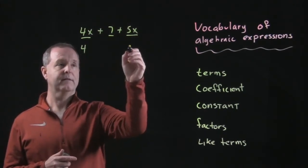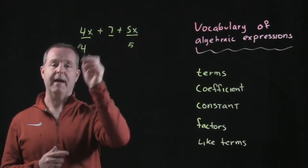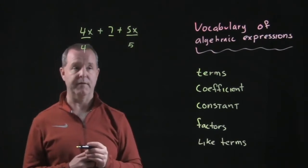And 5 is a coefficient. So we would say that 4 is a coefficient of x. And on this third term, 5 is a coefficient of x.